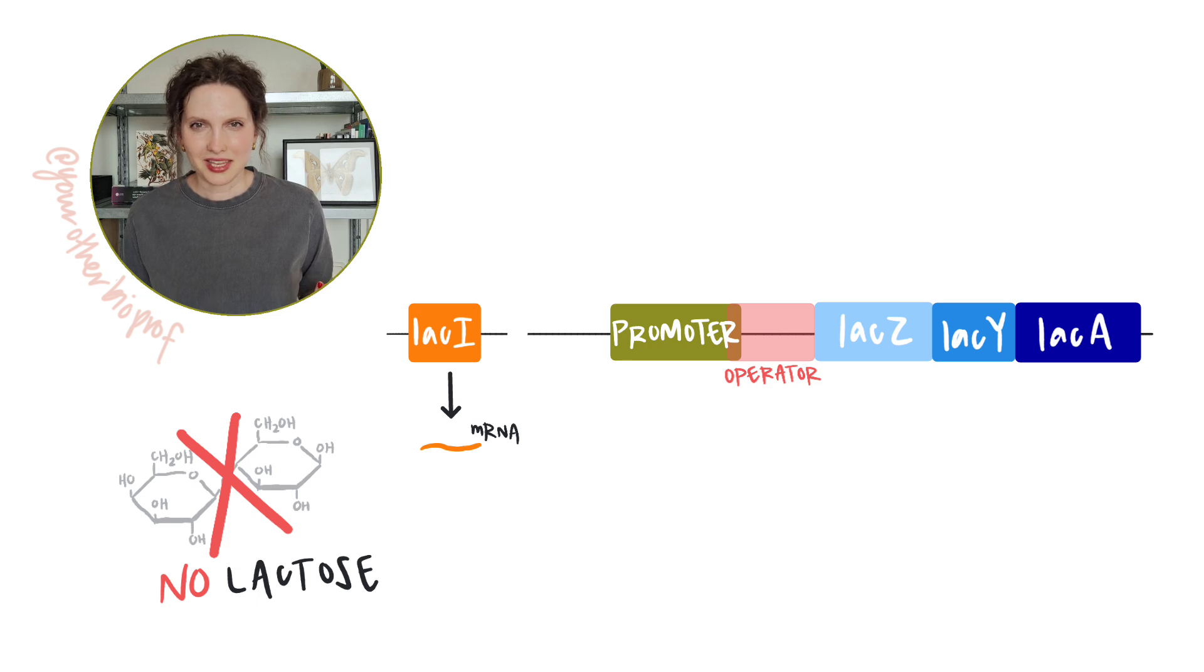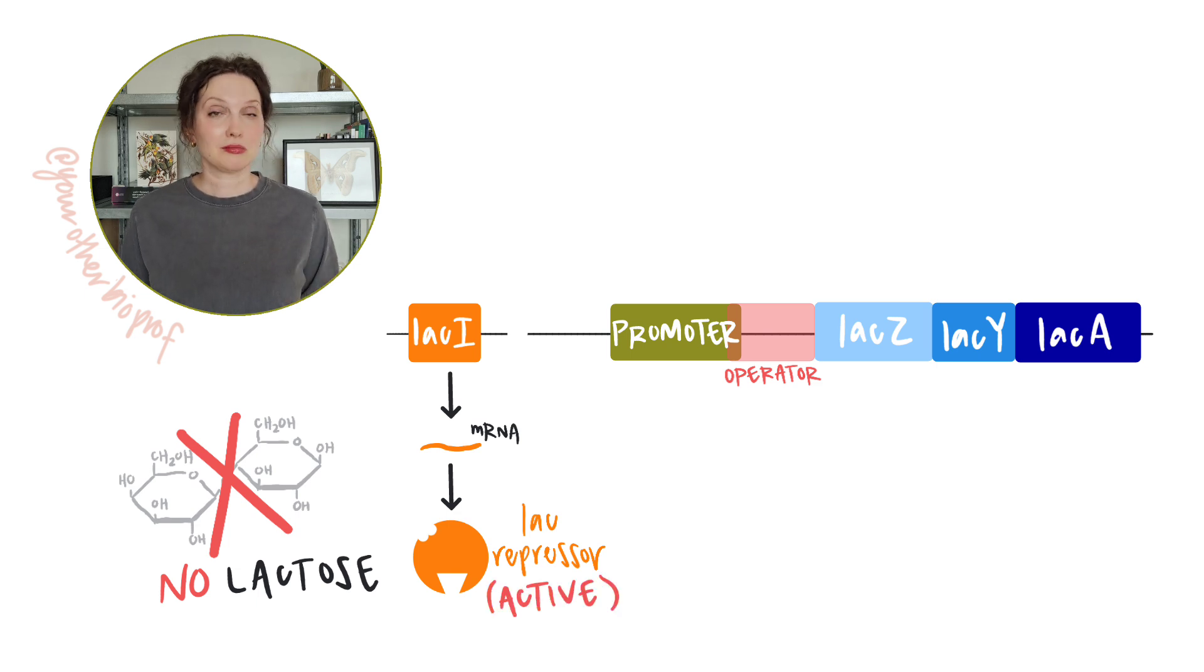What's the E. coli making here? Well, it's producing an mRNA that encodes a repressor protein called the lac repressor. Repressor sounds like something that wants to shut something down. Well, the lac repressor is produced in an active state, meaning it comes out ready to repress transcription of the lac operon. But how does it do that?